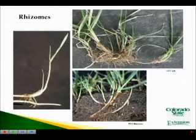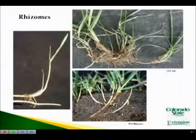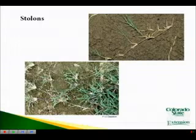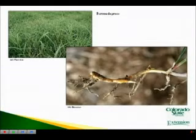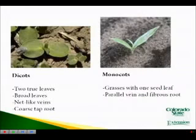Grasses are members of the plant family Gramineae. Some grasses and other woody monocots produce underground stems called rhizomes, such as Kentucky bluegrass and quackgrass, or above-ground runners called stolons, such as creeping bentgrass, while others produce both, such as bermudagrass. It is important to understand the distinction between monocots and dicots.